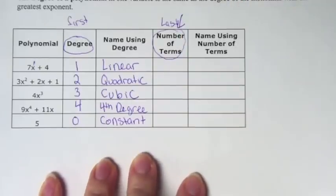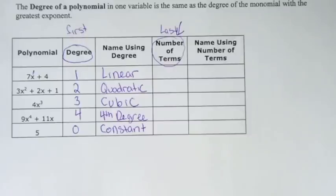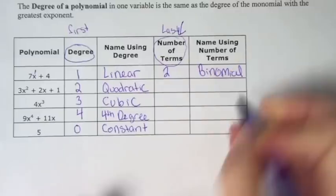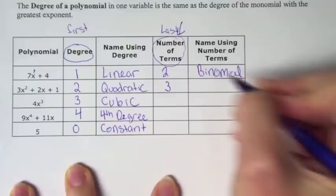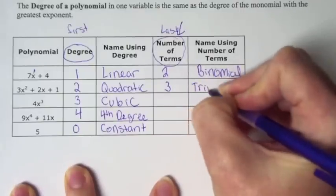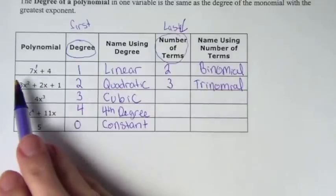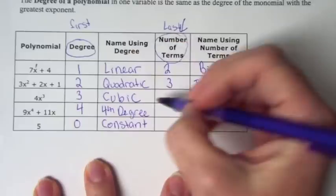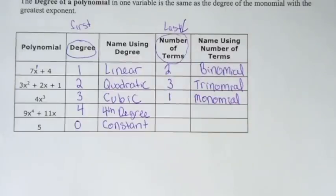The last name has to do with the number of terms each polynomial has. If you look at the first one, it has two terms — it's made up of two monomials. We call its last name binomial, because bi means 2. The next one has three terms, so we call it a trinomial. The next one has one term — we call it a monomial. Mono means 1, bi means 2, tri means 3. The ones you really have to remember are linear, quadratic, and cubic.